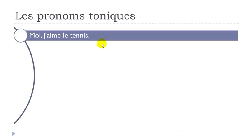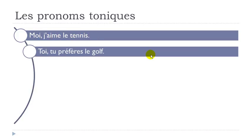I've prepared a few examples. First: MOI, J'AIME LE TENNIS. Here you start the sentence with MOI, and then you put the pronom personnel JE — J'AIME because the verb starts with a vowel. J'AIME LE TENNIS — I like or I love tennis. By starting with MOI, you insist on the fact that you really like tennis. Second example: TOI, TU PRÉFÈRES LE GOLF.